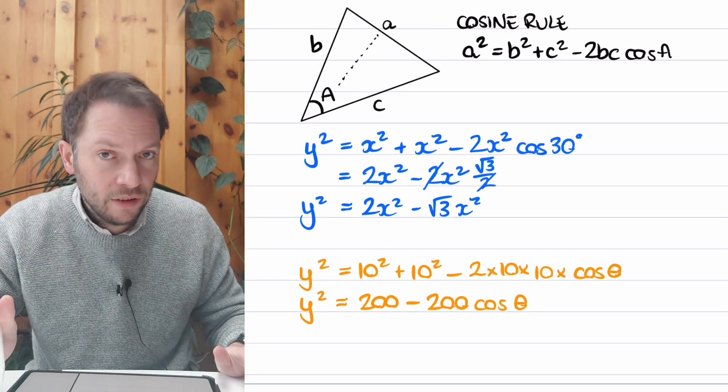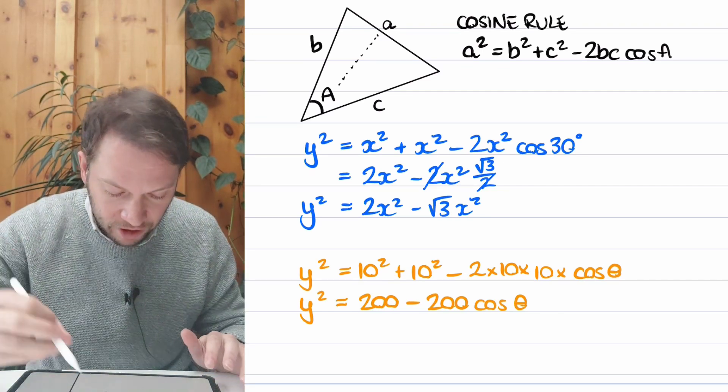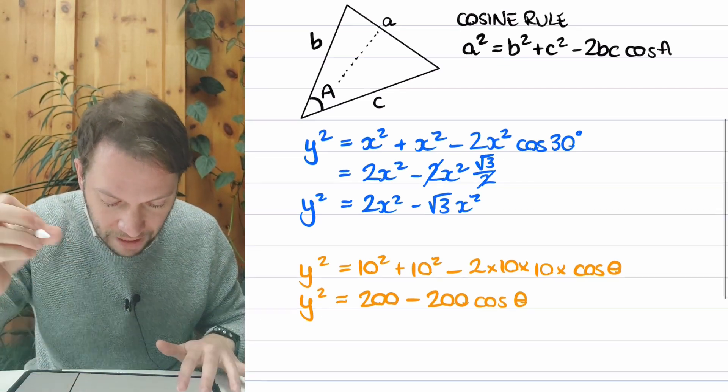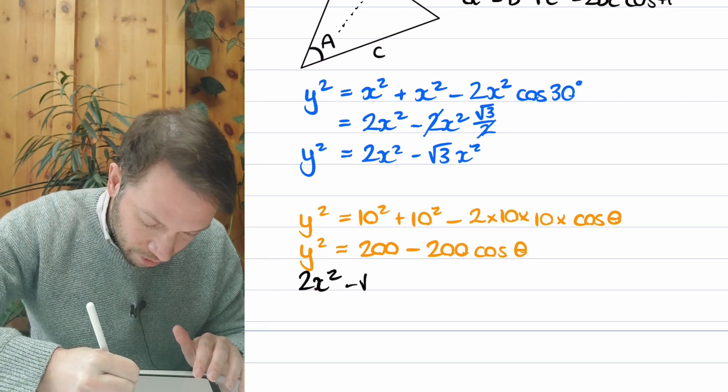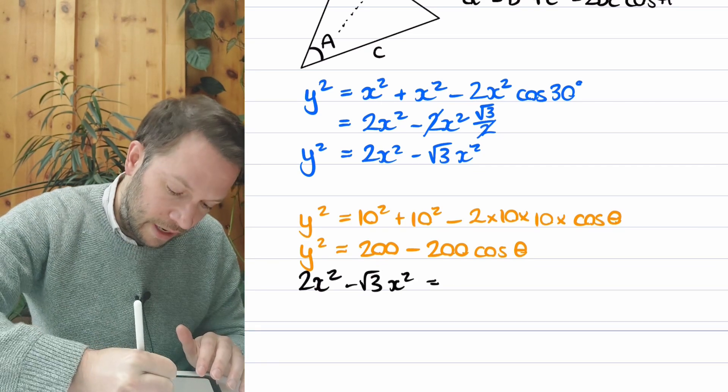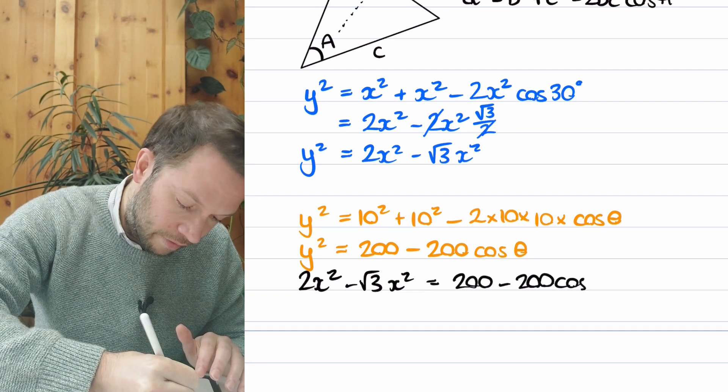Now, we know what Y squared is because we did it in blue with the other triangle. So we can now substitute that in. I'm just going to transfer to black. So the Y squared is 2X squared minus root 3X squared equals that right-hand side. So 200 minus 200 cos of theta.